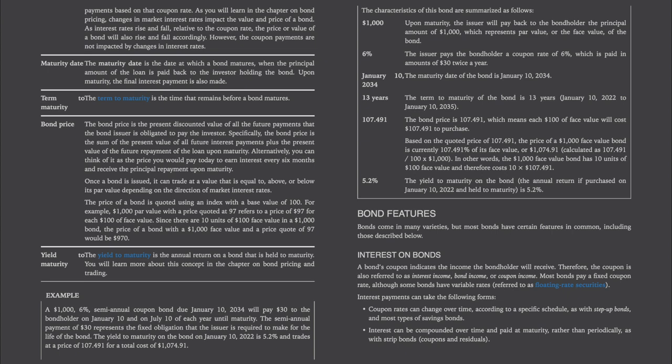Once a bond is issued, it can trade at a value equal to, above, or below its par value depending on market interest rates. The price of a bond is quoted using an index with a base value of 100. For example, a $1,000 par value bond with a price quoted at 97 refers to $97 for each $100 of face value. Since there are 10 units of $100 face value in a $1,000 bond, the price of a bond with a $1,000 face value quoted at $97 would be $970.